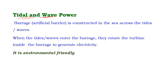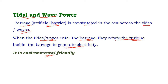Tidal and wave power. Barrages are artificial barriers constructed in the sea across tides or waves. When these tides or waves enter into the barrage, they rotate the turbine inside and electricity is generated. The environmental problems are minimal; hence it is considered an environmentally friendly method.